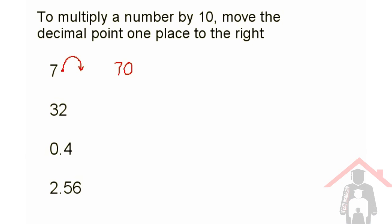When we're multiplying by 10, we always move the decimal point to the right, because we want the number to get bigger. For this question, the decimal point is here. If I move it one place to the right, I then have nothing under here, so it's going to be a zero again. The point's at the end, so I don't include it.